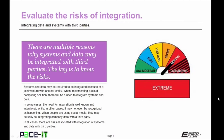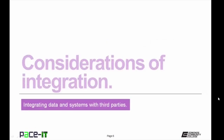Systems and data may be required to be integrated because of a joint venture with another entity, or when implementing a cloud computing solution there will be a need to integrate systems and data. In some cases, the need for integration is well known and intentional, while in other cases it may not even be recognized as happening. When people are using social media, they may actually be integrating company data with a third party. In all cases, there are risks associated with the integration of systems and data with third parties.